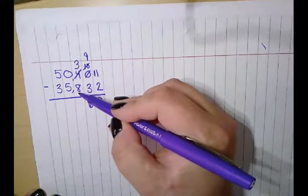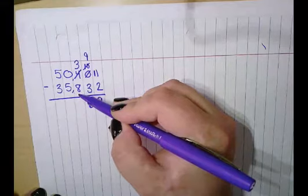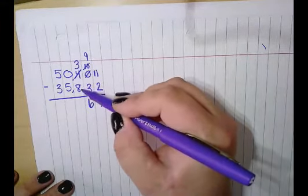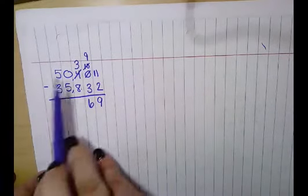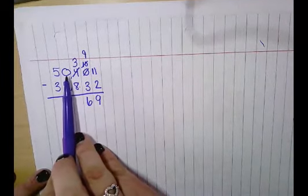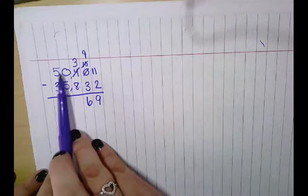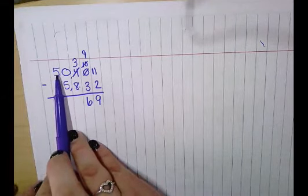3 subtract 8. Uh-oh, I can't do it. 3 is less than 8, so I cannot take 8 away from 3. I've got to borrow from my neighbor. Uh-oh, there's a zero. It has no value. I can't borrow anything from here. So I'm going to have to go to my next neighbor, which is 5.